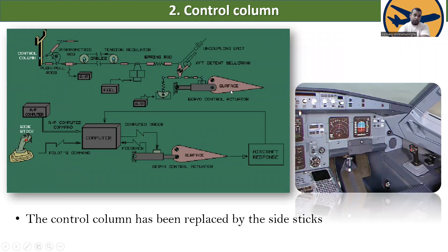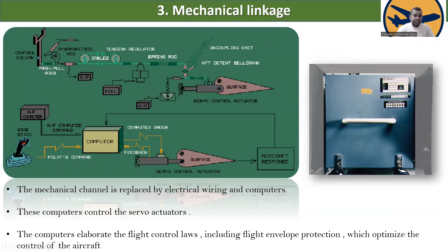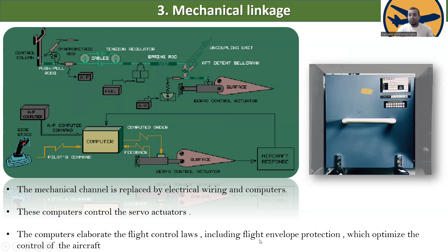The control column has been replaced by the side stick. The mechanical linkage — previously push-pull rods with each component linked mechanically — is now replaced by electrical wiring and computers. Before, it was mechanically linked; now it is electrically linked by wiring and computers. These computers control the servo actuators and elaborate the flight control laws, including flight envelope protection, which optimizes control of the aircraft.